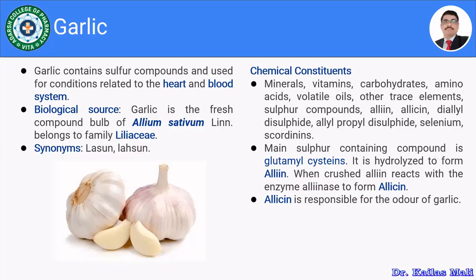Garlic contains mainly sulphur compounds and is used for conditions related to the heart and blood. It is obtained from Allium sativum, belonging to the family Liliaceae. It is also known as Lesun.